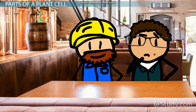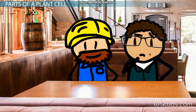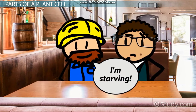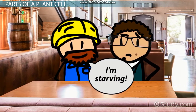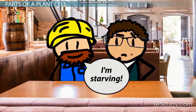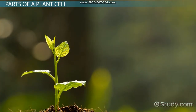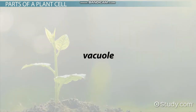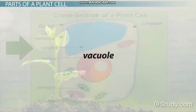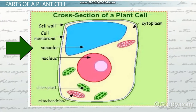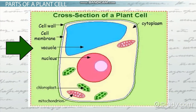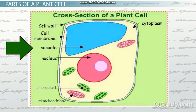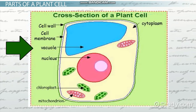When factory employees get hungry or thirsty, they usually go to the factory's restaurant or kitchen. Plant cells also have something similar called the vacuole. The vacuole usually stores food or other nutrients that the cell will use for energy.